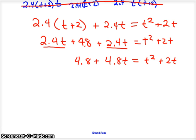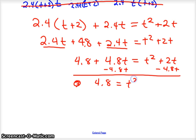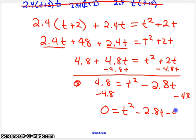And bring everything else down. Then I'm going to subtract the 4.8t over, so when you do that you've got 4.8 equals t squared minus 2.8t. Then move your 4.8 over, so we're going to subtract 4.8 over to this side. You can't combine it with anything else, and so zero equals t squared minus 2.8t minus 4.8.